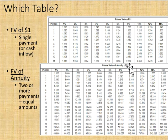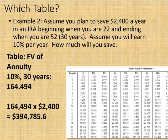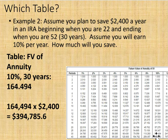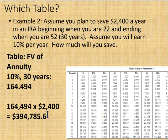We also have tables for future value. The future value of a dollar covers a single payment; the future value of an annuity covers multiple payments. For example, if you save $2,400 per year in an IRA starting at age 22 and ending at age 52 — 30 years — at 10 percent interest, the future value of an annuity factor is 164.494. Multiply that by $2,400 and at the end of 30 years you will have $394,785.60.